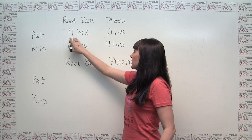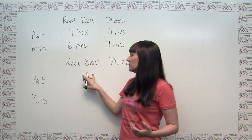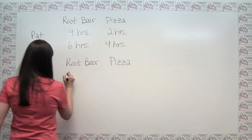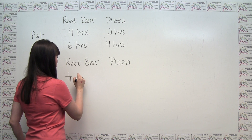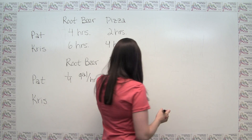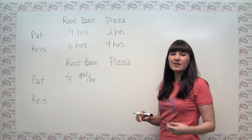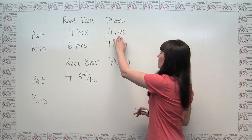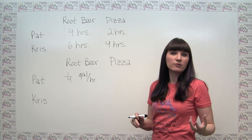It stands to reason that if it takes four hours to make a gallon of root beer, then Pat can make one-fourth of a gallon of root beer per hour — that's Pat's rate of making root beer. Similarly, if Pat can make a pizza in two hours, he can make one pizza every two hours, which we can express as one-half of a pizza per hour.